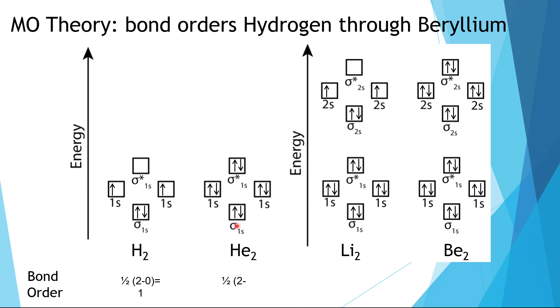For helium, we can see that we have two in the bonding, two in the antibonding, and so we'll have two minus two divide by two equals zero.